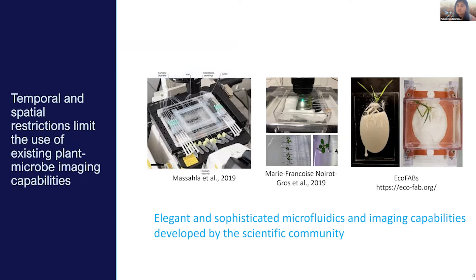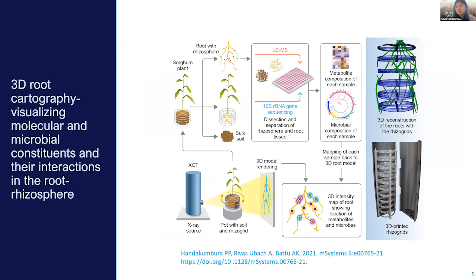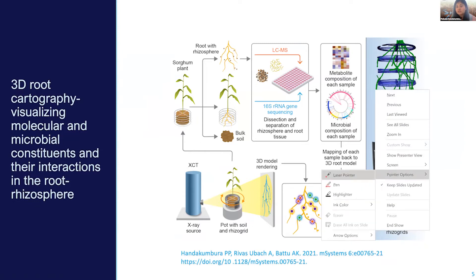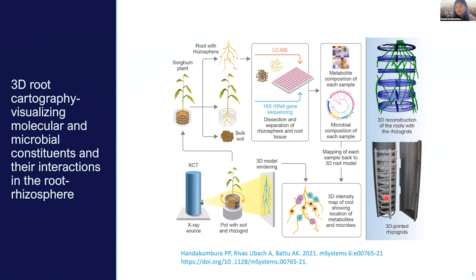What we have put together is a workflow which we call our 3D Root Cartography Platform. Here we are using these riser grids — these are 3D printed grids — and we are using this customized setup to hold our root system so that we can preserve the root system architecture. We can use a variety of growth media here: soil, sand, your choice. And then we can grow our experiment in these custom-built riser-grid-fitted 3D parts.